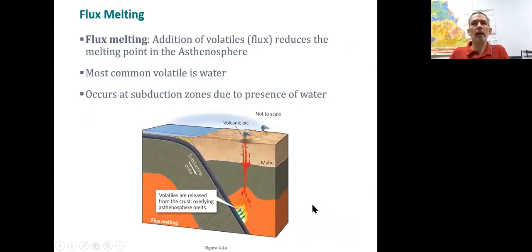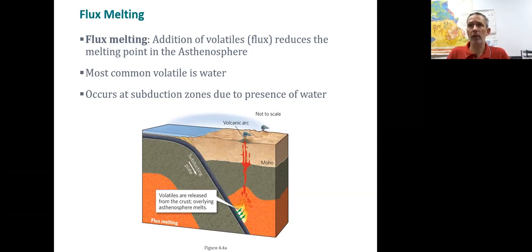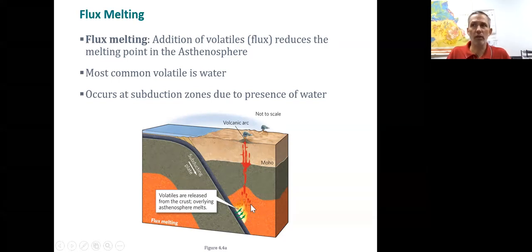To get flux melting, you need to add some type of flux. One great flux that works for rocks is water — water is going to lower the temperature at which rocks melt. In a subduction zone, water is being transferred from the pore spaces of rocks deeper into the earth, and so that water is going to cause these rocks to melt. Once the rocks melt, they'll be less dense than the rocks around them and will start to rise.